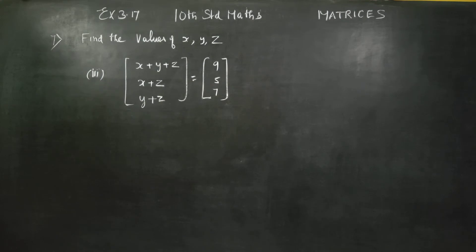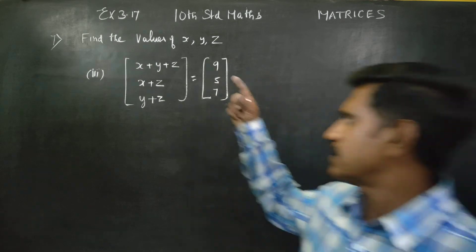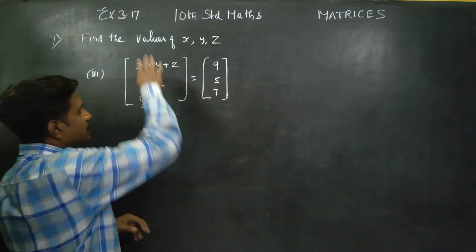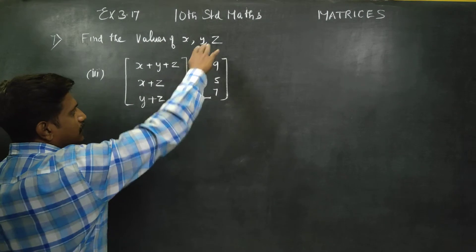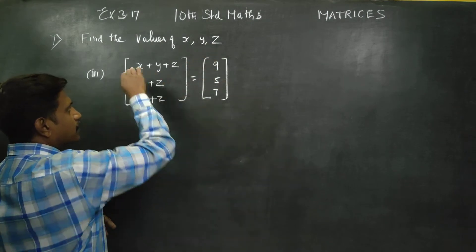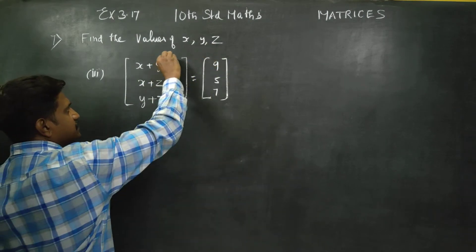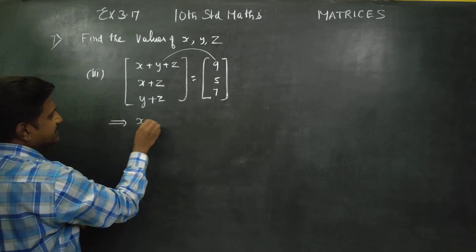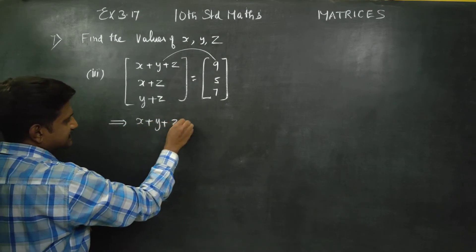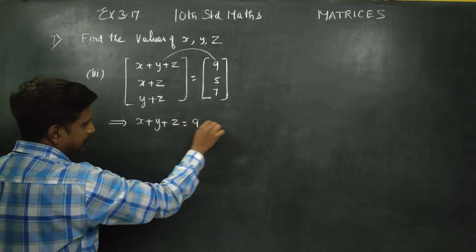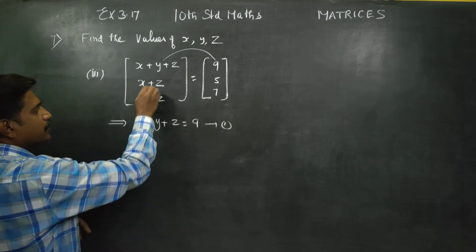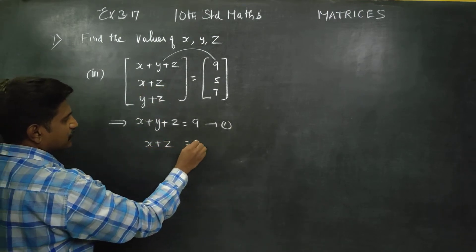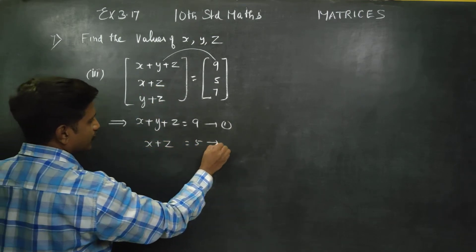How to find the values of x, y, z? We have to find this matrix. This is a column, this is a column. 3 is equal, 3 is equal, 1 is equal, 1 is equal. This implies x plus y plus z is equal to 9 — equation number 1. X plus z is equal to 5 — equation number 2.